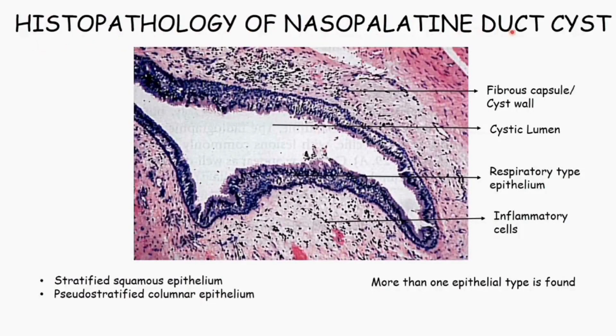Histopathology of nasopalatine duct cyst. Histopathologically, we are going to see the lining epithelium and the surrounding cyst wall, also called the fibrous capsule.